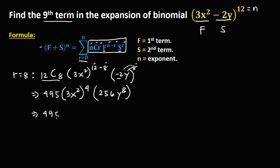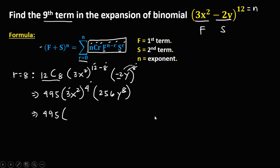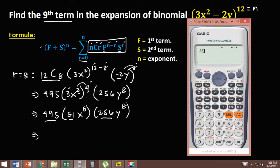So we have 495, then times 3 to the power 4, which is 81. Then x to the power 8 — because exponent raised to another exponent, you multiply: 2 times 4 gives x to the power 8. Copy 256, then y to the power 8. Multiply all the numbers: 495 times 81 times 256 equals 10,264,320.